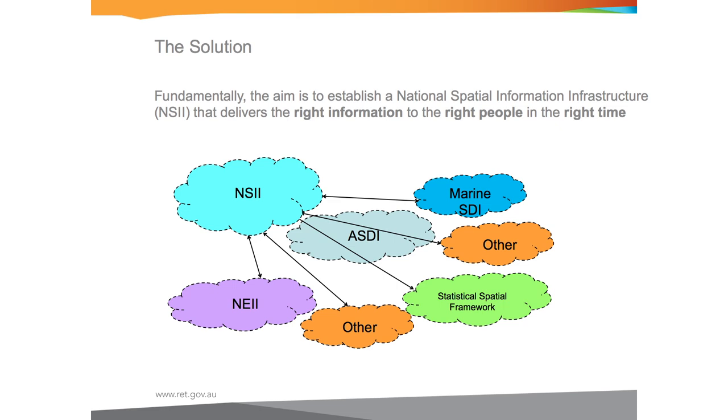The solution we're looking at is taking away this concept of an Australian spatial data infrastructure that nobody really knows what it means, and talking now about a national spatial information infrastructure which is linked to other government information infrastructures — data.gov being precisely one of those. There are also infrastructures happening in the NCRIS space, in the research space, and a major infrastructure being developed in the Bureau of Meteorology called the National Environmental Information Infrastructure. We're looking at how we might link research infrastructures like IMOS, TERN, and ARIN to help you contextualise your government information.